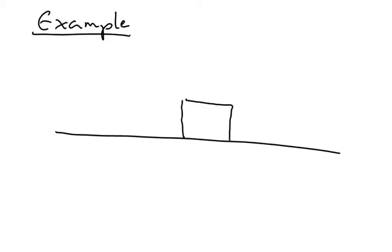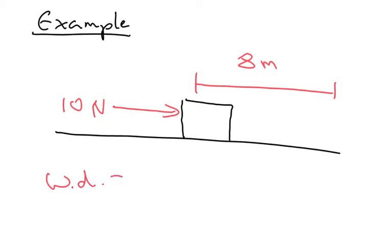Let's have a look at an example. Let's imagine we've got a box here and a force of 10 newtons is applied to it and it moves a distance of 8 meters. So how much work has been done or how much energy has been transferred? Remember, work done equals force times distance. So here we've got 10 newtons times 8 meters, which gives us 80 joules of work being done.